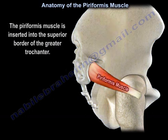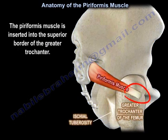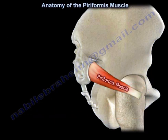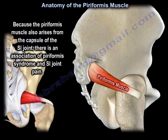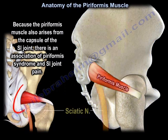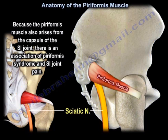The Piriformis Muscle is inserted into the superior border of the greater trochanter. Because the Piriformis Muscle also arises from the capsule of the sacroiliac joint, there is an association of Piriformis Syndrome and sacroiliac joint pain.